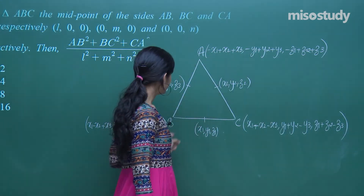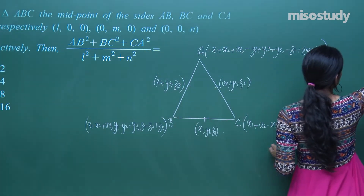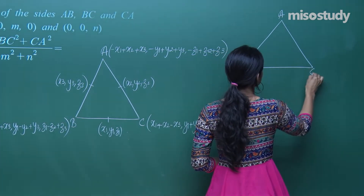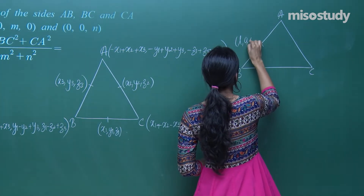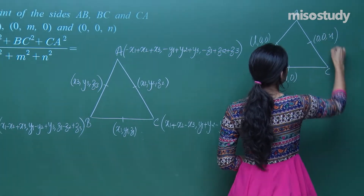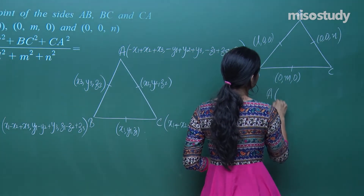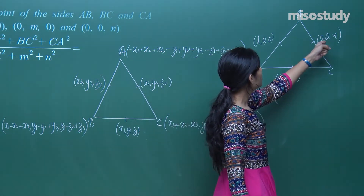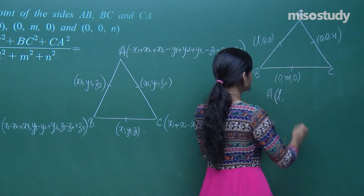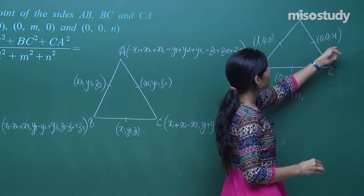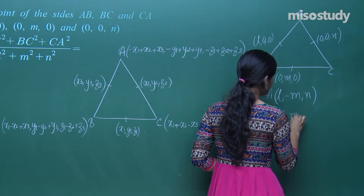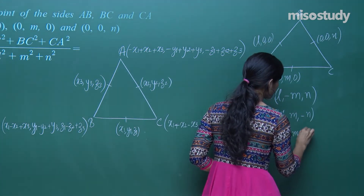In this problem, the given midpoints are (l,0,0), (0,m,0), and (0,0,n). Applying the vertex formula: A = (l, −m, n) — wait, specifically A = (0−0+l, −m+0+0, −0+n+0) = (l, −m, n); B = (l, m, −n); C = (−l, m, n).